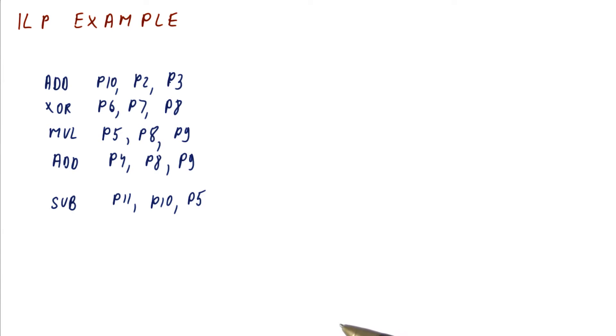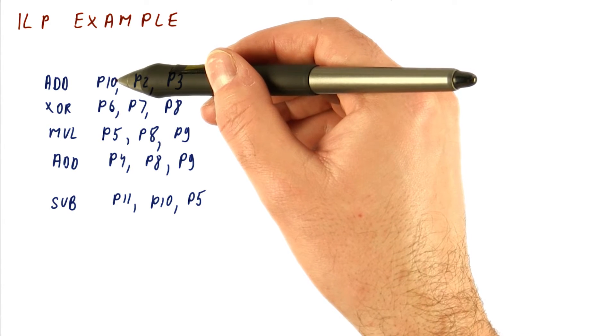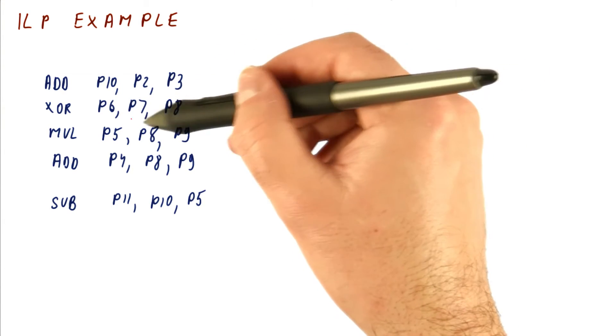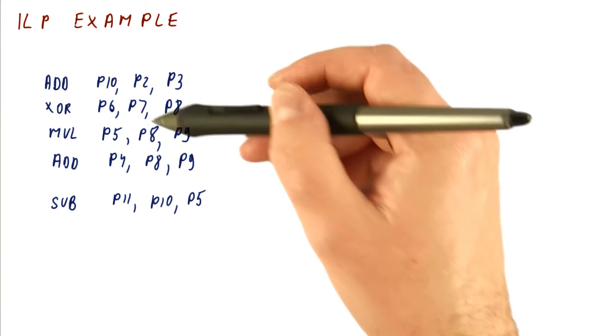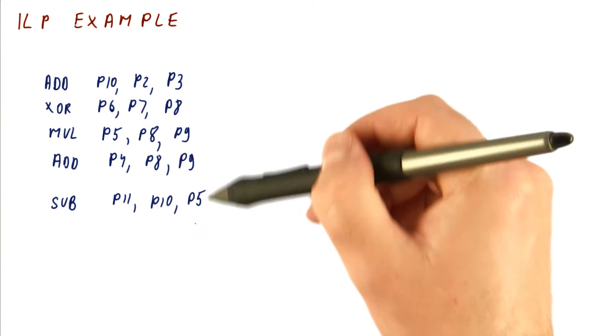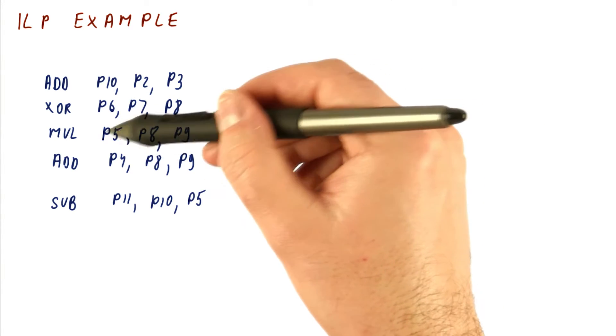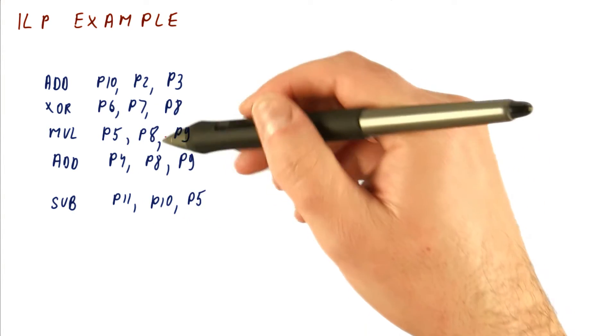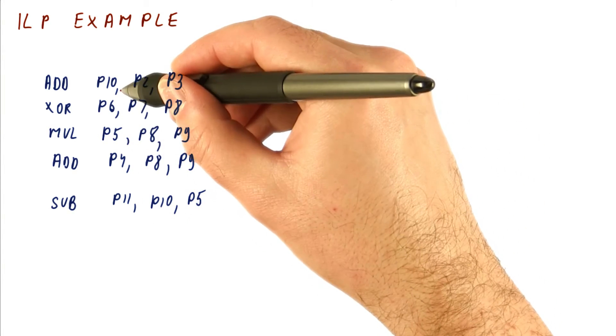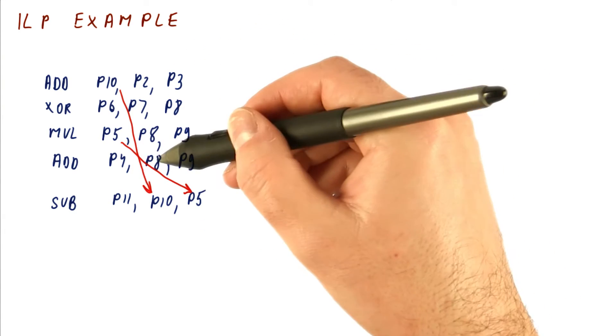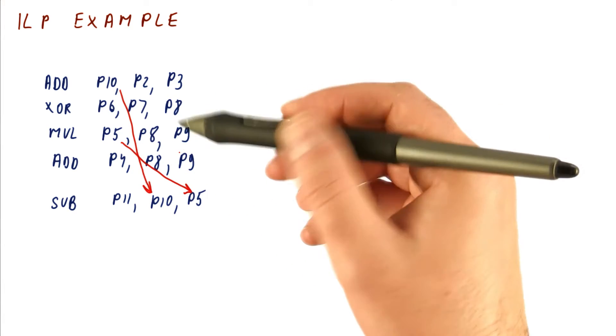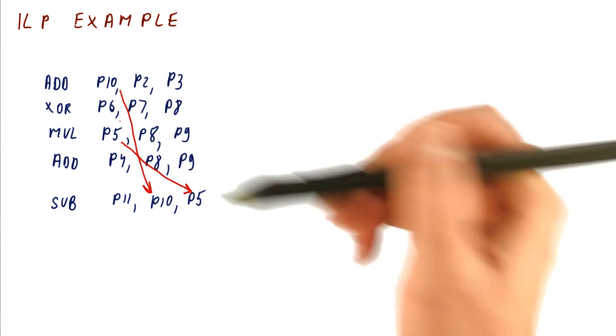Now let's look for those true dependencies. We write to P10, this instruction doesn't use P10. Actually, the first one that uses P10 is this one. We write to P6, nothing uses P6. We write to P5, this one uses P5. So there is a dependence here, and another one here, and then here we produce P4. So we only have really these two true dependencies.